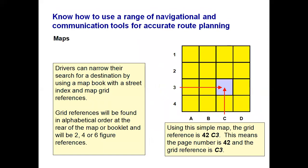Once you've found the street or town in the rear index of the map book, it will give you a page number and grid reference. For example, 42C3 means page 42, and C3 is the letter and number identifying the location on the grid where you would find your destination.